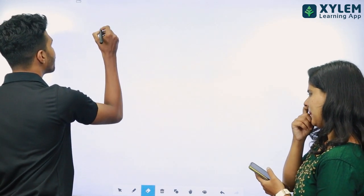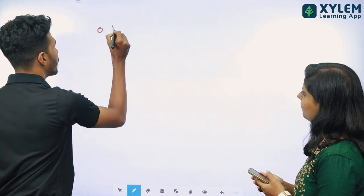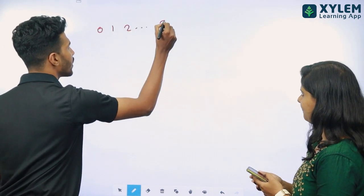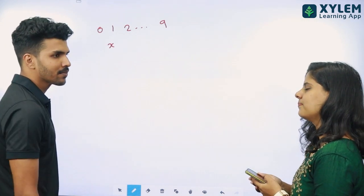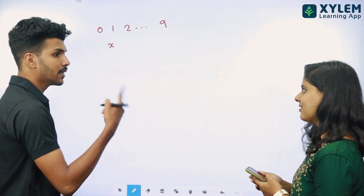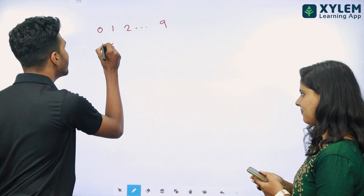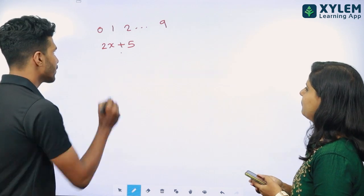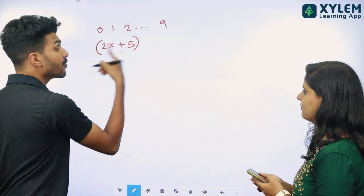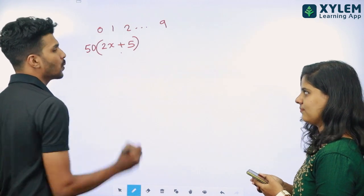I'm going to check the mobile number. That mobile number is 0, 0, 1, 2. That one-digit number is x. The other one is w. The other one is 2x. The other one is 5x. The other one is 5x — 2x plus 5. The other one is 50. That's why we multiply: 15 into 2x plus 5.